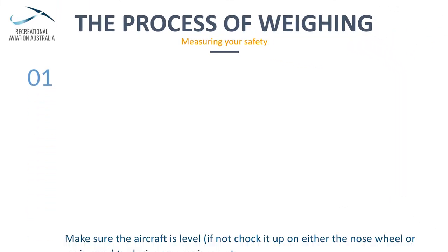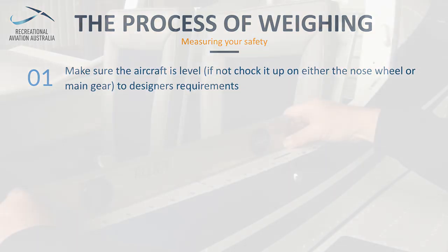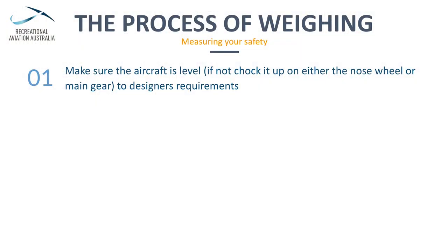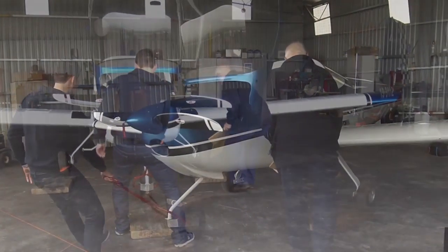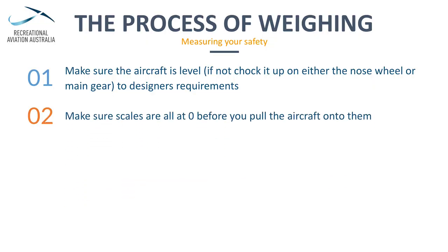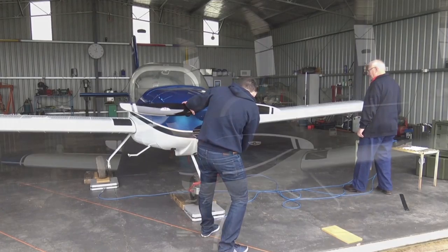Make sure the aircraft is level — the manufacturer should state the levelling point. It is acceptable to level the aircraft by inflating or deflating the nose wheel tyre and/or the oleo strap. Small pieces of timber may also be used for levelling the aircraft. Ensure the scales are set to zero, including any pieces of wood used for levelling the aircraft. Move the aircraft onto the scales and ensure the aircraft, again, is level.